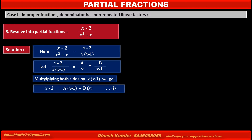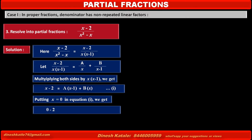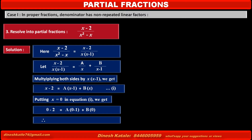Now we have to find the values of a and b. To find the value of a, we eliminate the term containing b. Putting x equal to 0 in equation 1, the left hand side becomes 0 minus 2, equal to a(0 minus 1) plus b·0. Solving, we get a equal to 2.